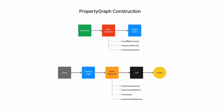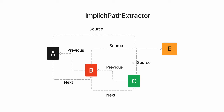We'll discuss in detail about these extractors and retrievers in upcoming slides. Starting with the graph extractors — there are three different graph extractors: implicit path extractor, simple LLM extractor, and schema LLM extractor. Let's start with the implicit path extractor. Given a large text chunk, we divide it into three different chunks A, B, and C. The relationships between these chunks are: B comes after A, C comes after B, A comes before B, B comes before C, and all three chunks come from source text E. So with the implicit path extractor, by just creating chunks and their node relationships, we create a property graph.